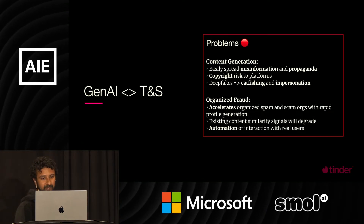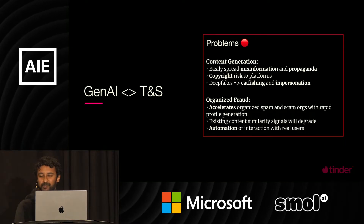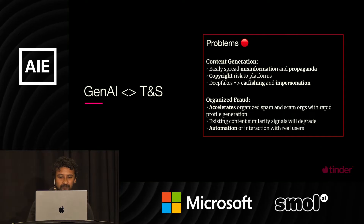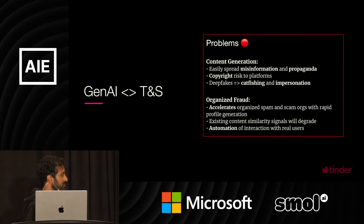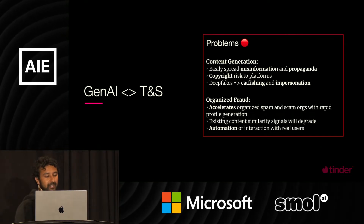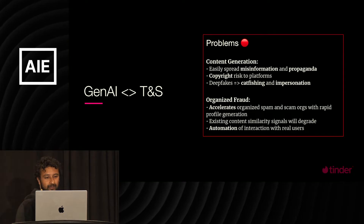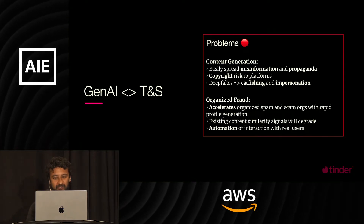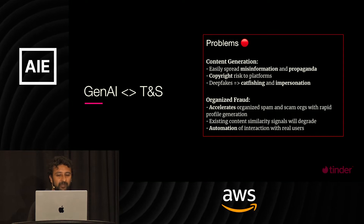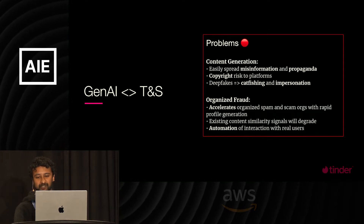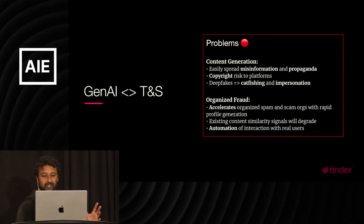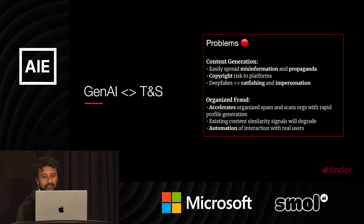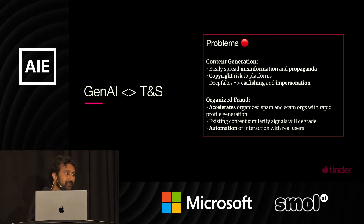Another problem is the accessibility of deepfake technology, which lowers the bar of entry to impersonation and catfishing. This also enables malicious interpersonal harm, like in the case of revenge porn. Lastly, Gen AI can be used to scale up organized spam and scam operations. Bad actors can rapidly create profiles by generating text and images, which means that existing signals — the ones we're using today — that rely on similarity matching or hashes will be increasingly less likely to work.